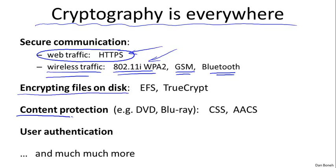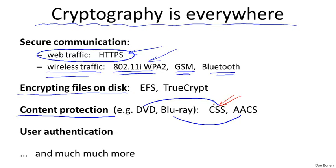Cryptography is also used for content protection. For example, when you buy DVDs and Blu-ray discs, the movies on these discs are encrypted. DVD uses a system called CSS, the content scrambling system, and Blu-ray uses a system called AACS. We'll talk about how CSS and AACS work. It turns out that CSS is a fairly easy system to break, and we'll do some cryptanalysis and actually show how to break the encryption used in CSS. Cryptography is also used for user authentication and many other applications.